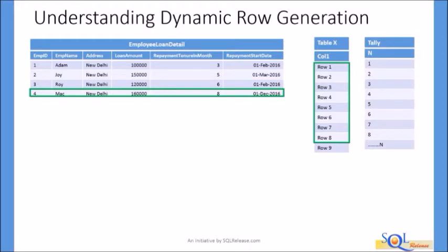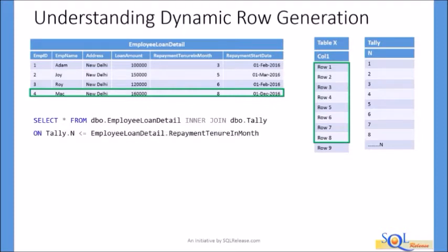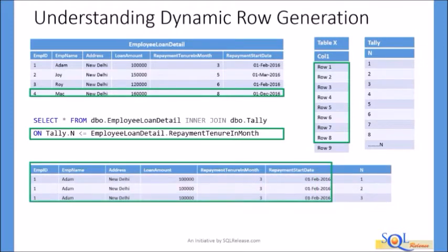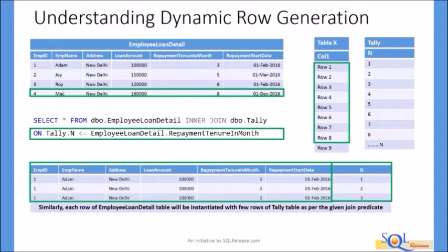You can watch the tally table chapter if you have not watched that video. To expand the rows of the Employee Loan Detail table, we write a SELECT statement that joins the Employee Loan Detail table and the tally table and extracts all columns from both tables. Since we need only matching records from both tables, we use an inner join. The join predicate restricts the multiplication of rows to only those records of the tally table whose values are less than or equal to the value of the Repayment Tenure in Month column. Each row of the Employee Loan Detail table will be instantiated with as many rows of the tally table as given in the Repayment Tenure in Month column.